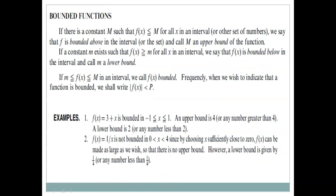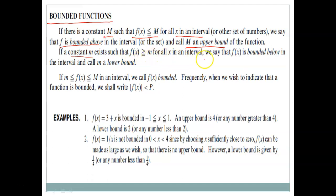Moving on to bounded functions: we say f is bounded above if there is a constant M such that f(x) ≤ M for all x in any interval, and M is called the upper bound. If there exists a constant m such that f(x) ≥ m for all x in the interval, then f is bounded below, and m is called the lower bound.